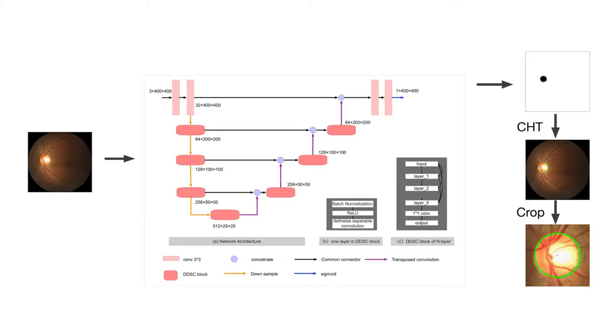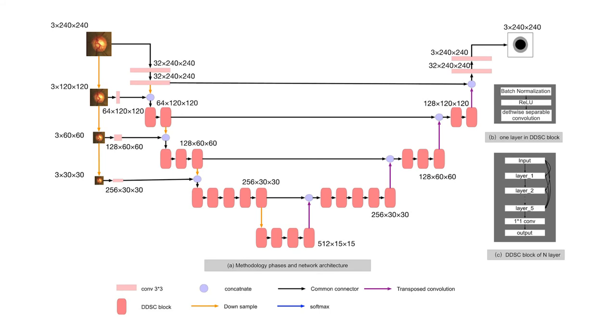To summarize, the network takes in pictures of the fundus and outputs the segmentation of that fundus. The investigators actually use two networks trained differently in one pipeline: one simpler network to roughly determine the borders of the optic cup and identify the region of interest in the fundus and crop the image to it, and one network to precisely segment both the optic cup and the optic disc. That cropped image is then fed into the second network to get a final result.